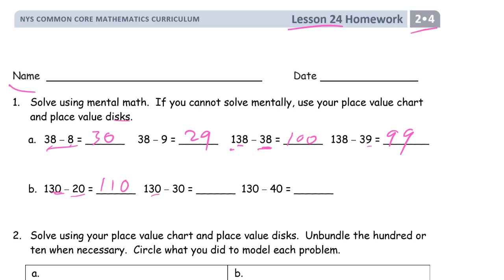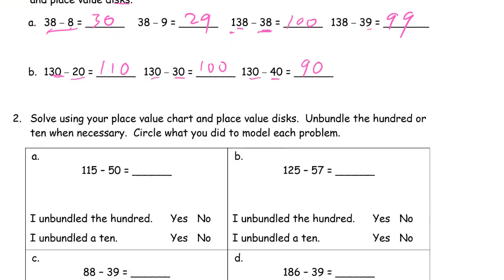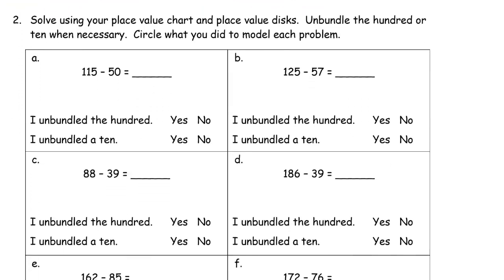And 130 minus 30 — we'll have the 100 left, we're taking away the 30. For 130 minus 40: 130 minus 30 is 100, and we're taking away 10 more, so we should have 10 less, which leaves 90. That's just a little mental warm-up to get you thinking about the tens, ones, and digits.